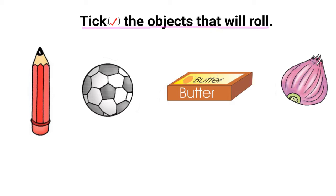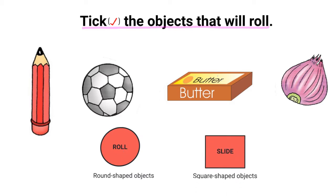Take the objects that will roll. Let's remember that round shaped objects will roll. Is this a round shaped object? Yes, it is round — it will roll, so let us put a tick mark here. The next one — is this round? Yes, this is a round shaped object, so it will roll. The next object — is this round shaped? No, it's not, so we will not tick mark it. Is this onion round shaped? Yes, this onion is round shaped, so we will tick mark this one.